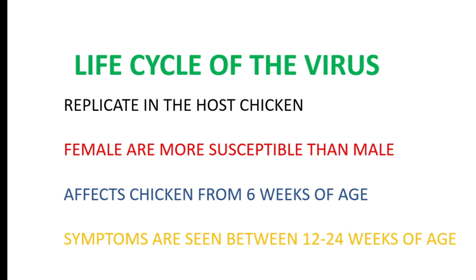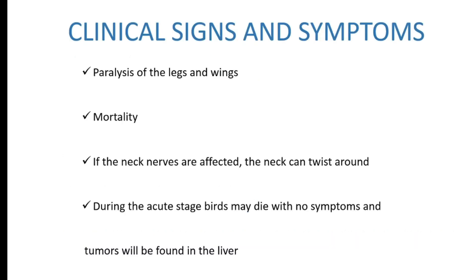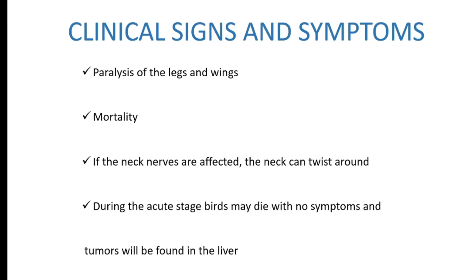Now let's look at the clinical signs and symptoms. First, you will start experiencing paralysis of the legs and wings, as seen on screen, and then you will start experiencing mortality in your own flock. If the neck nerves are affected, the neck can twist around. During the acute stage, birds may die with no symptoms, and tumors will be found in the liver.